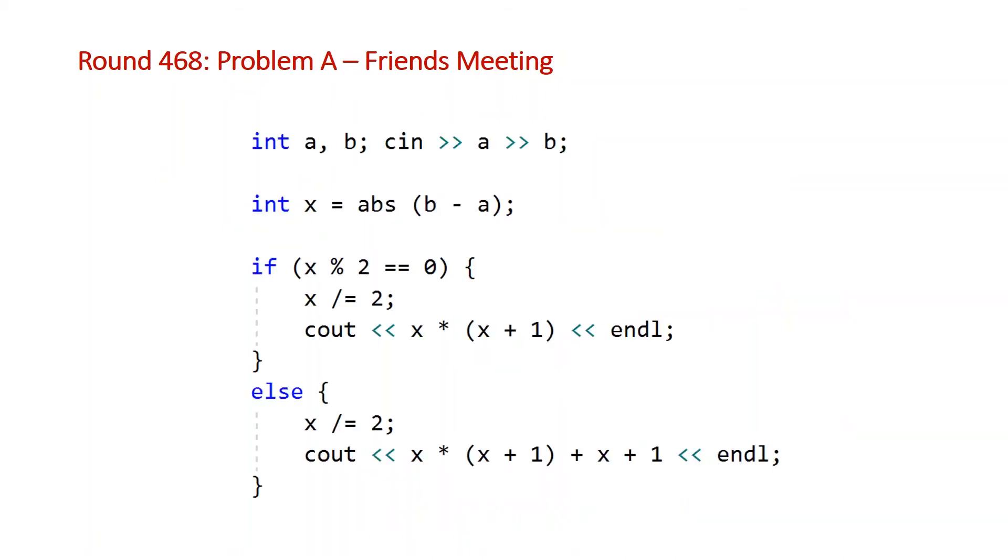So here is what the code initially looks like. We're going to modify this a bit to simplify it, but you can see here that we're taking A and B and just reading that from our standard input. We then calculate x, which is the absolute difference between A and B. And then we have two cases. So when this distance x is even, we're going to get that distance, do the divide by 2 and then just plug that into our n times n plus 1 formula.